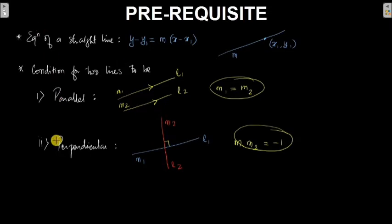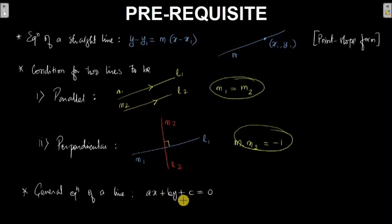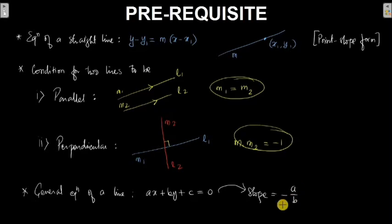One more thing you need to know is the general equation of a line. The general equation of a line looks like Ax + By + C = 0. If such a line is given, its slope will be minus A divided by B. These are all the things you need to know before we do the problems.